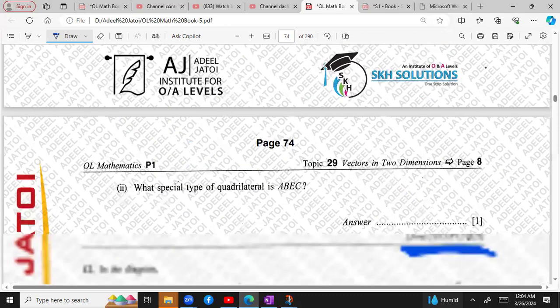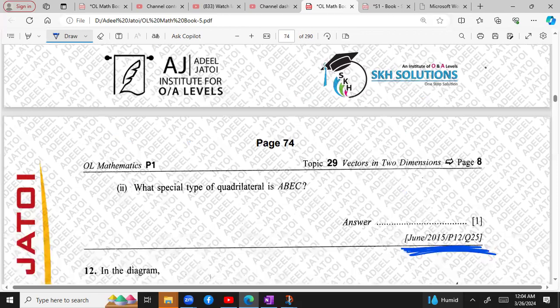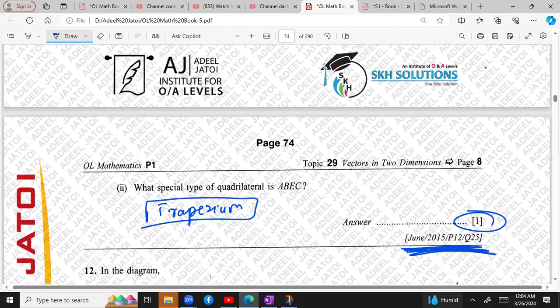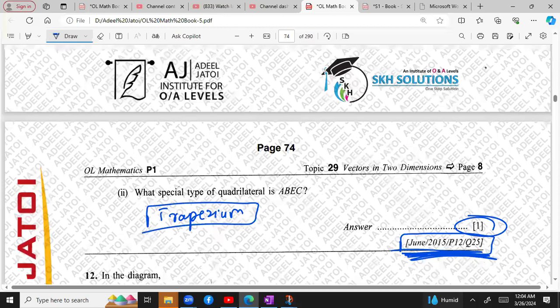Your next part is what special type of quadrilateral is ABEC. So ABEC is trapezium. So this is one mark question, June 2015, paper 1 question number 25 and question 11 from the book.